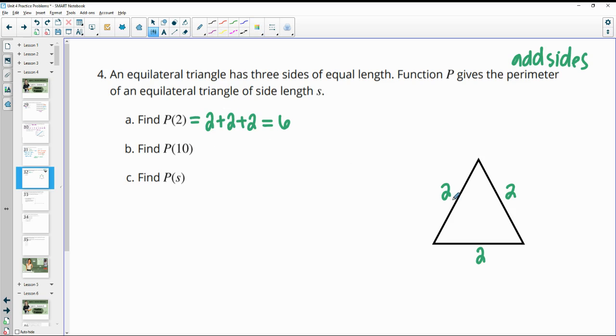If the sides were all 10, so instead of 2, we had 10 on each side. Then the perimeter would be 10 plus 10 plus 10, which would give us 30.